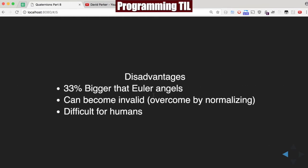Disadvantages: it's still that extra number. It makes it 33% bigger than Euler angles, not angels. And it can become invalid, which you can try to overcome by normalizing. And they're a little difficult for humans to understand.